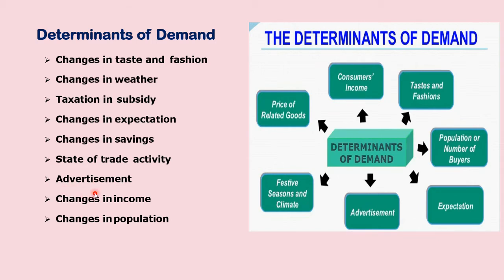The seventh determinant is advertisement. You may be sitting in front of the TV with no desire to buy a soap or shampoo, but suddenly someone on an advertisement says, 'I use this soap and see my complexion — I became fair, my pimples and dark spots have gone.' Immediately you want to run to the shop to buy that brand. So advertisements increase our demand. By simply seeing an advertisement, we develop a craving to buy commodities.